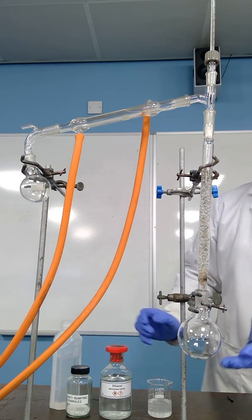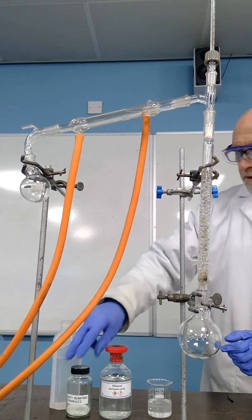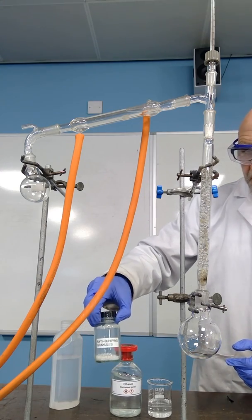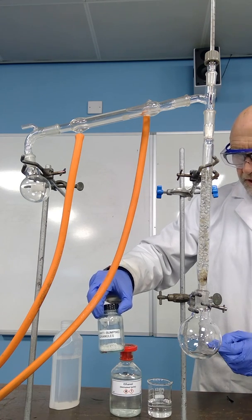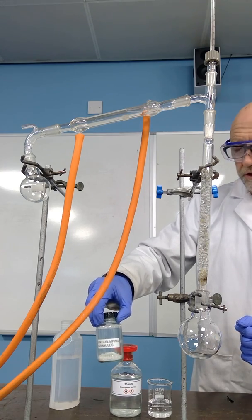This mixture is going to be transferred into the round bottom flask. We're also going to add some anti-bumping granules. The reason for doing this is that they provide an inert surface for boiling so the boiling doesn't get too violent.